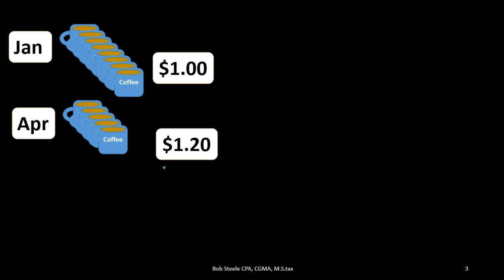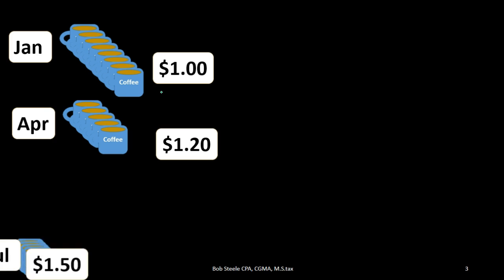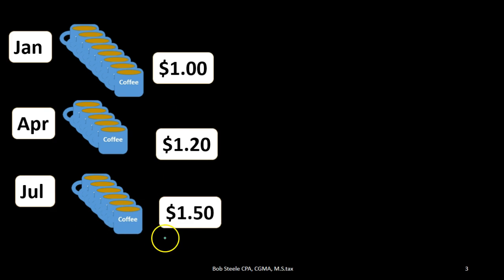Why do prices go up? Because of inflation — the value of the dollar goes down. Prices could go down as well if, for example, the glaze on a coffee mug became cheaper, but the norm is that prices go up, and everything would be reversed if prices go down. Then in July we purchased another batch of coffee mugs at $1.50 — prices going up again. We haven't sold any coffee mugs yet in this example.